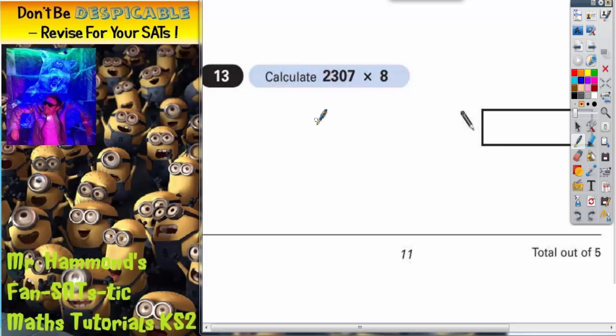Now this should be nice and simple as long as you remember how to do your multiplication column method. So we want 2307, and we're going to set it up like this, multiplied by 8 with a line for our answer.